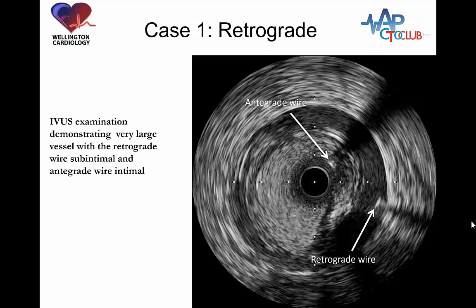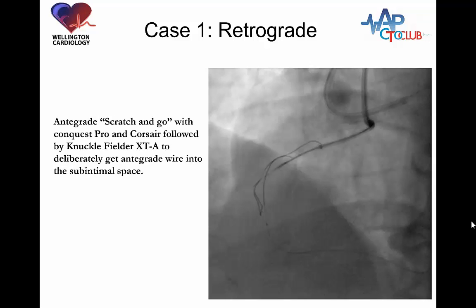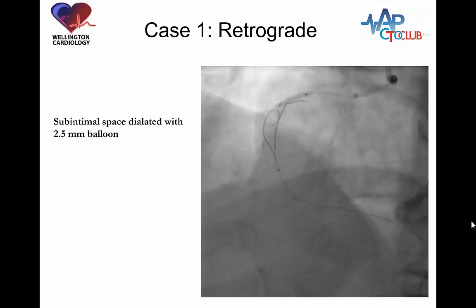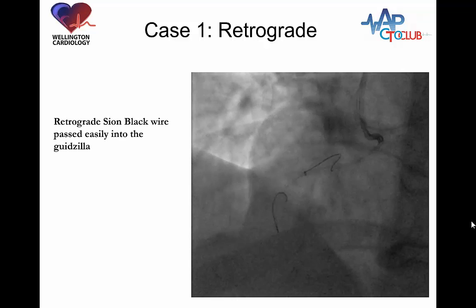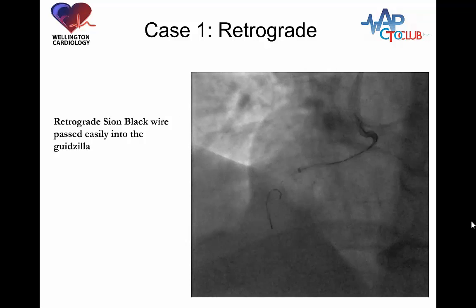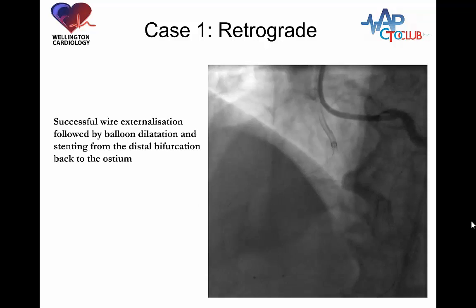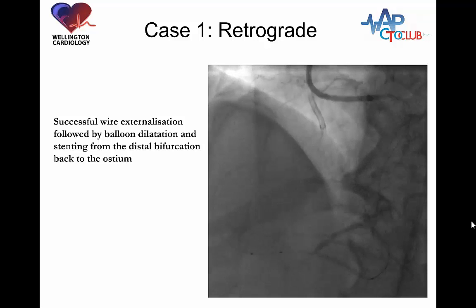This tells us we have two strategies: use a bigger balloon, but the vessel size here is 6.0mm, or do a scratch-and-go proximally to get the antegrade wire into the same sub-intimal space, which will allow the connection to be made. We undertook a scratch-and-go using a Conquest Pro and a Corsair followed by a knuckle of an XTA to get the antegrade wire into the sub-intimal space. Ballooning of the sub-intimal space was then performed over the antegrade wire, allowing the connection to be made, and the guidewire was wired using a Cyan Black. The wire was then externalized in a routine manner, followed by balloon dilatation from the osteum to the distal bifurcation and stenting of the right coronary artery from the osteum to the distal bifurcation.